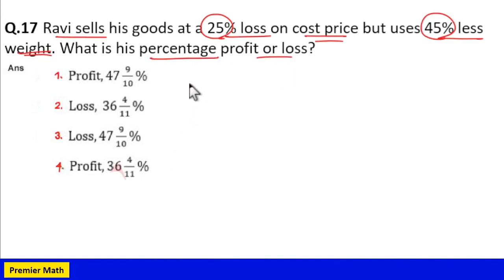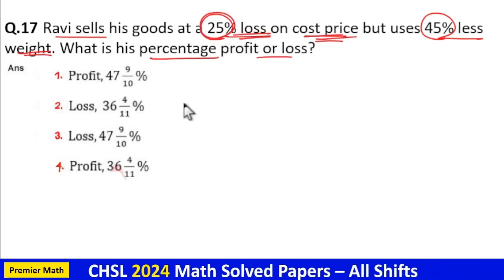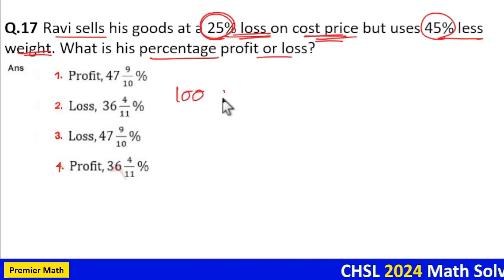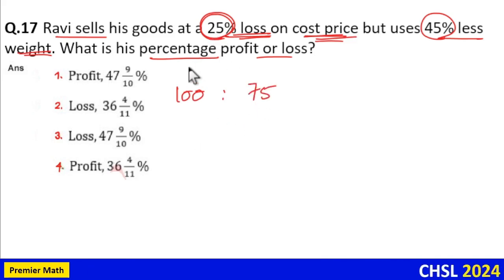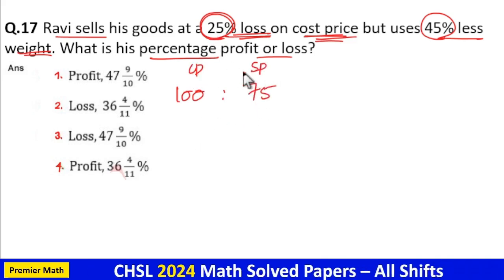Take the cost price and sell price ratio. Here 25% loss on cost price means if 100 rupees is the cost price, 100 minus 25, 75 rupees is the sell price. This is cost price and this is sell price.